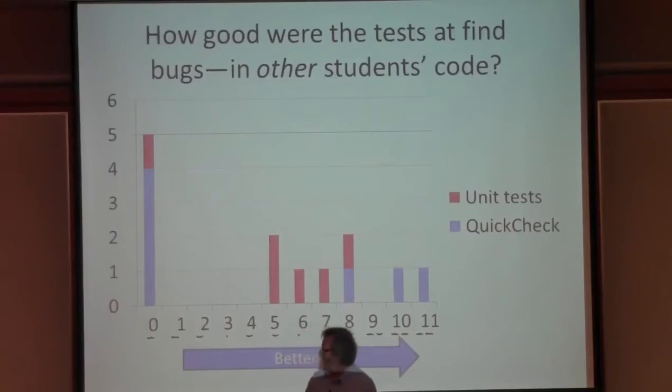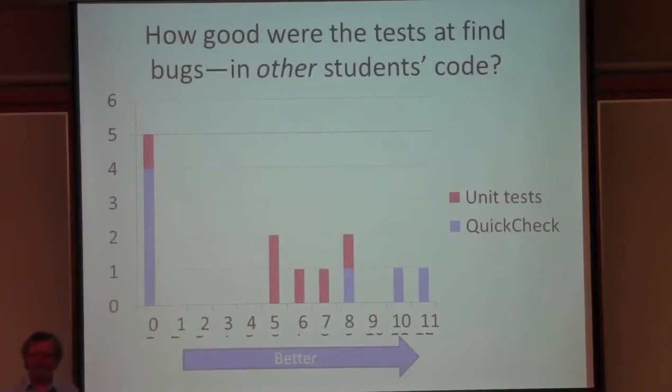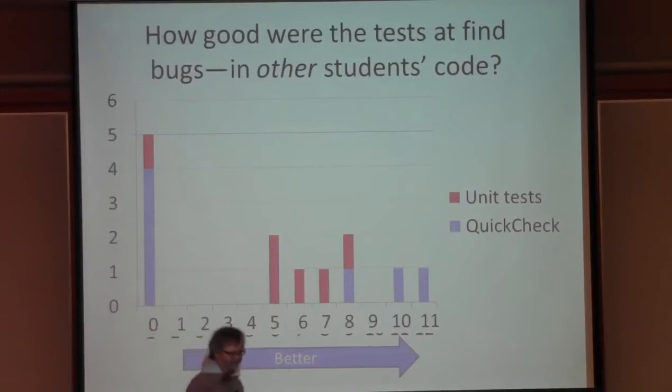But what about these test suites that could find no bugs whatsoever? Almost all of them were produced by students who were asked to write QuickCheck properties. How could they fail so badly? How can you write a test suite that finds no bugs at all? Write no tests - exactly. And that's what these students did. What we can learn from this is that if you write QuickCheck properties, they'll be very effective at finding errors.